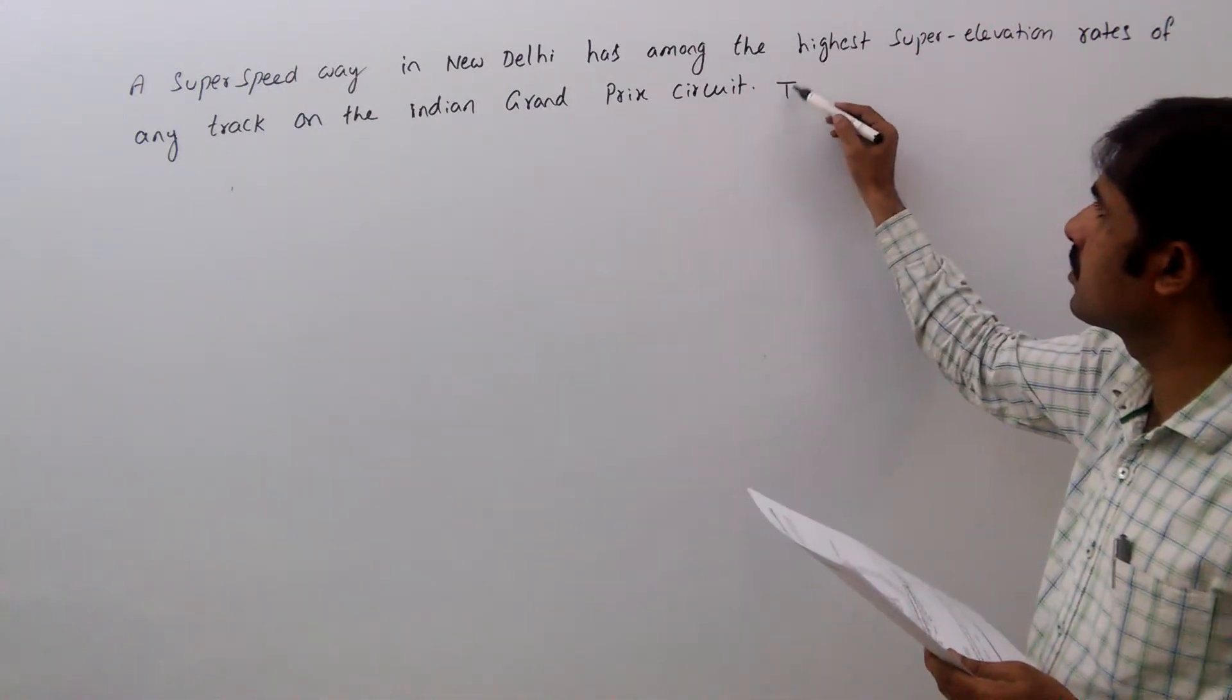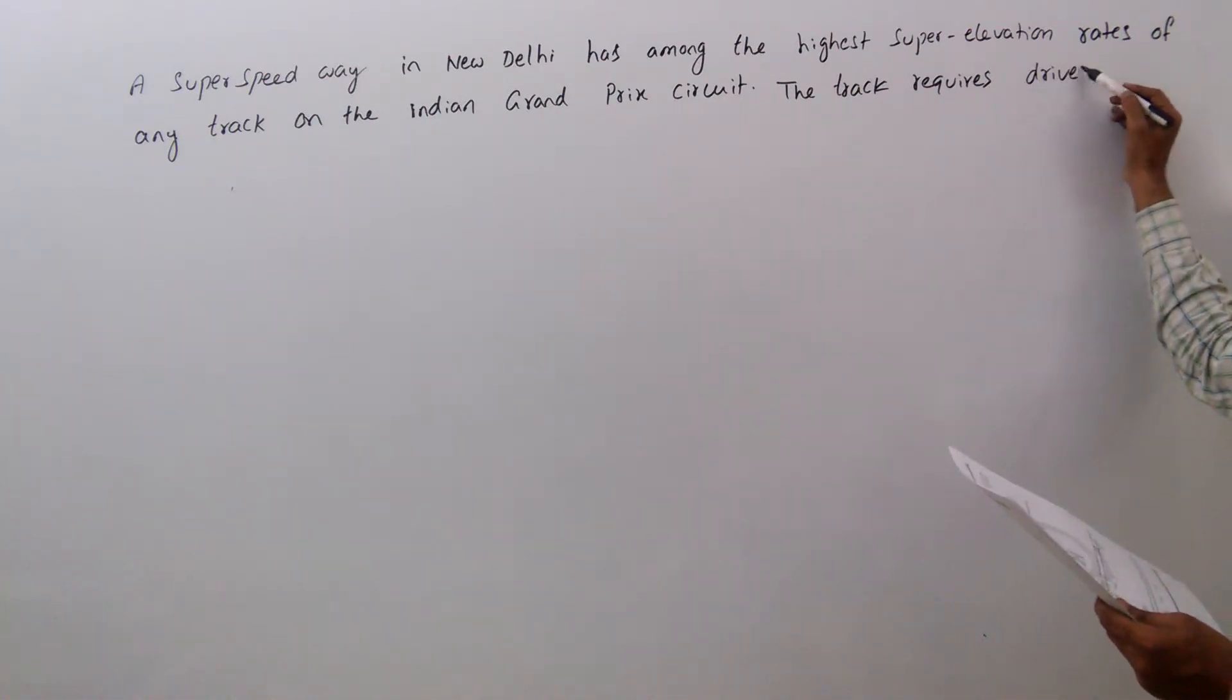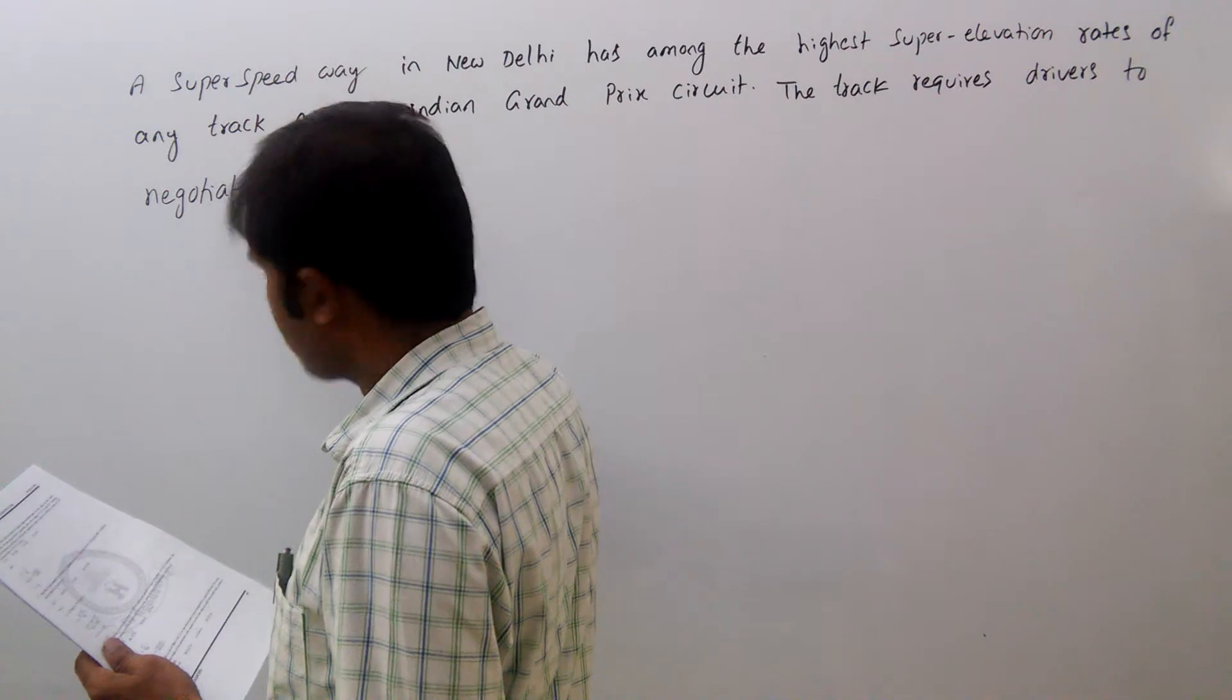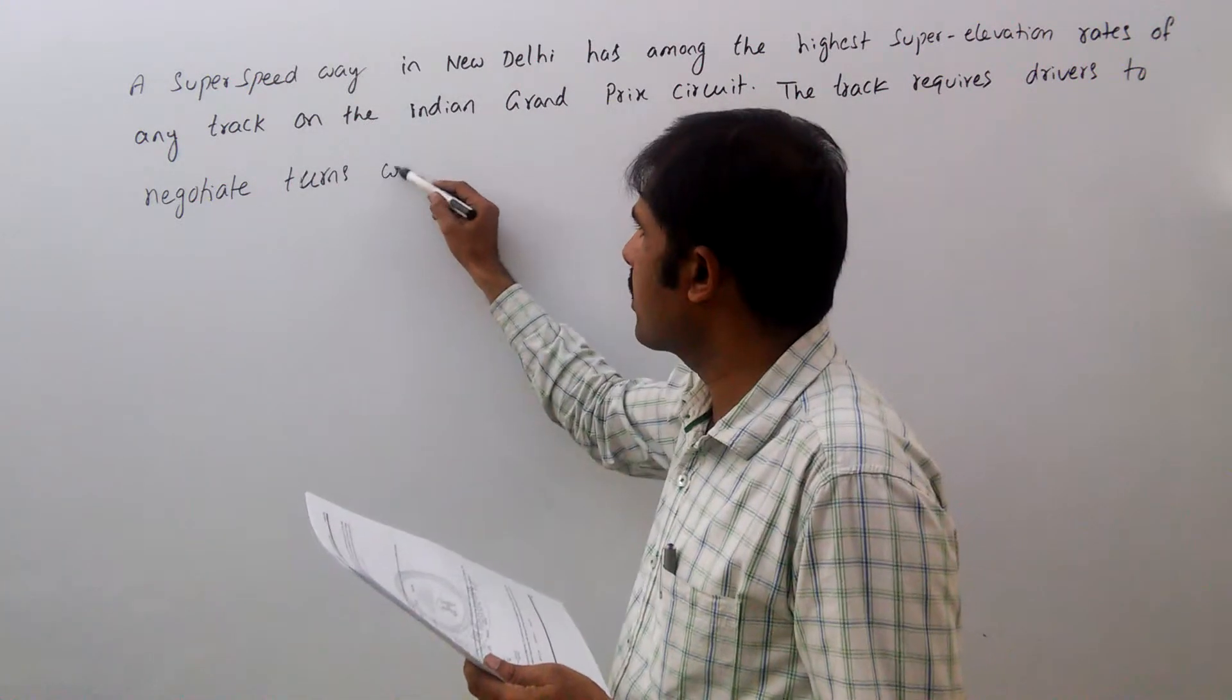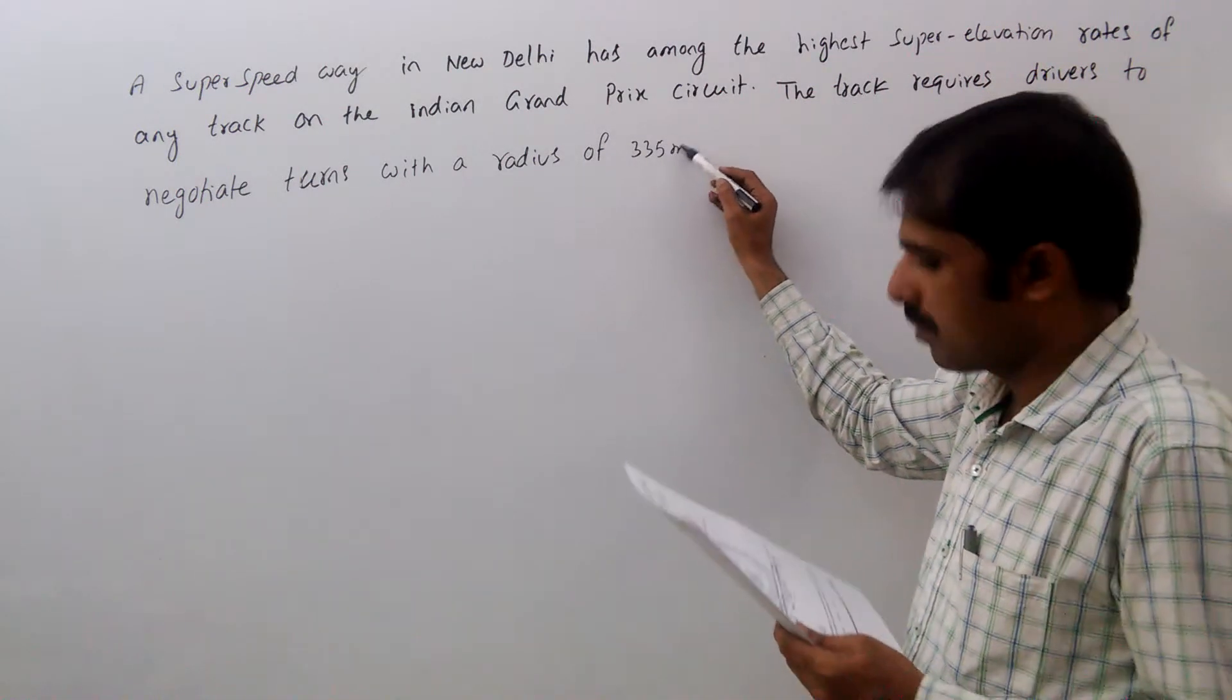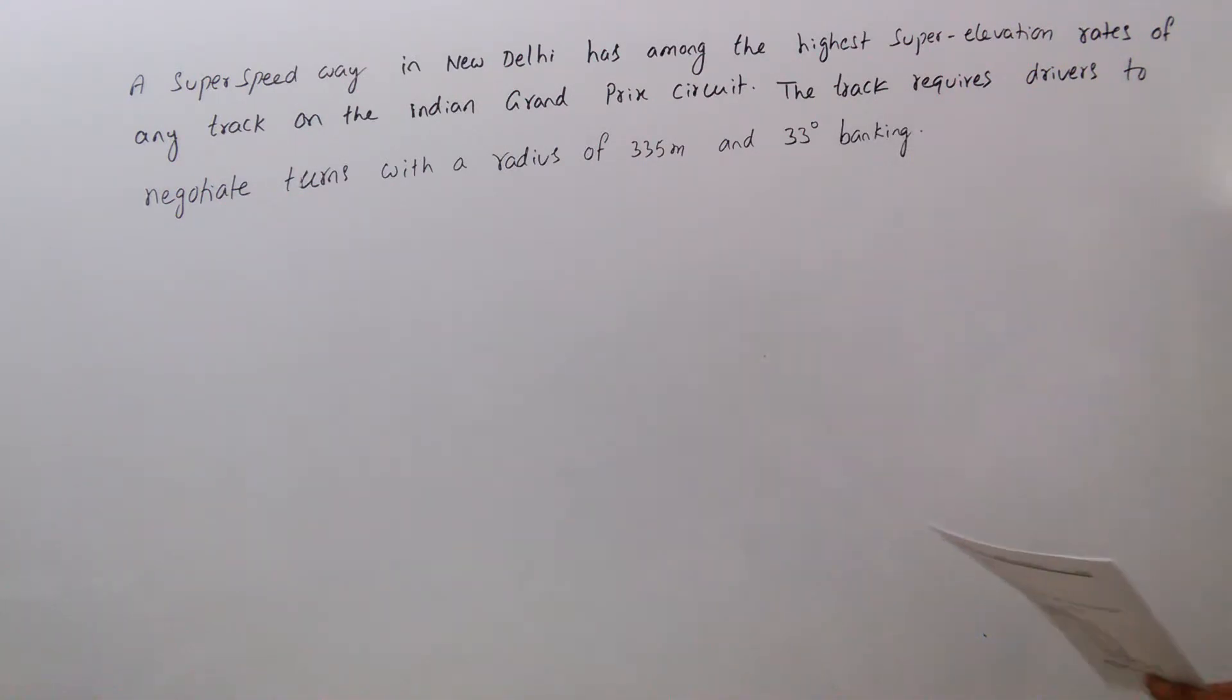The track requires drivers to negotiate terms with a radius of 335 meters and 33 degrees banking. Banking means angle of banking, that is super elevation and 33 degrees.